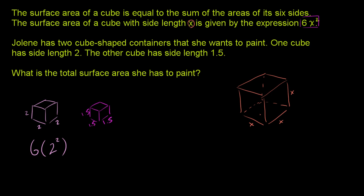And then the surface area of this cube is going to be 6 times 1.5 squared. 1.5 squared. And if we want the total surface area she has to paint, it's going to be the sum of the two cubes. So we're just going to add these two things.